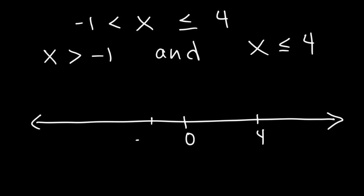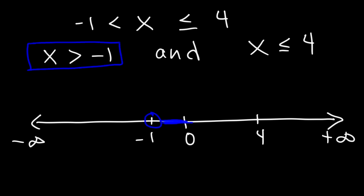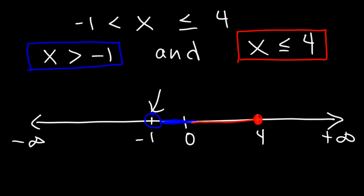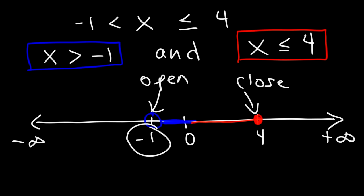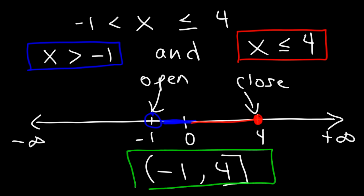With that in mind we can now plot the inequality. Here's 0, here's 4, and here's negative 1. For x greater than negative 1, we have an open circle and shade to the right. For x less than or equal to 4, we have a closed circle, but it's also less than 4. So x is between negative 1 and 4 with an open circle at negative 1 and a closed circle at 4. In interval notation, the shaded region goes from negative 1 to 4, giving us (−1, 4].